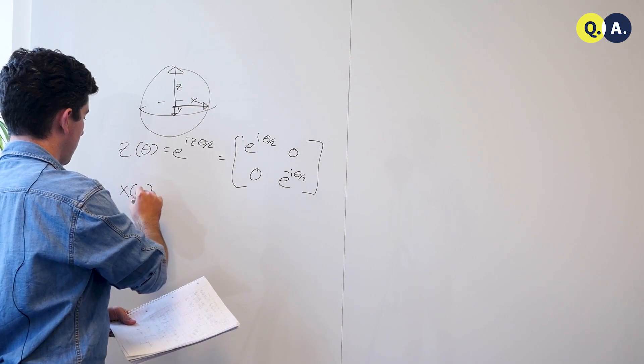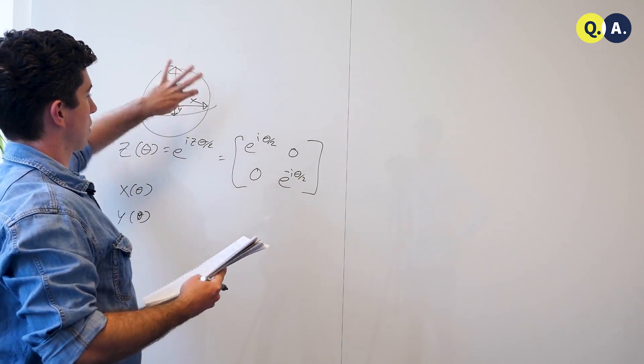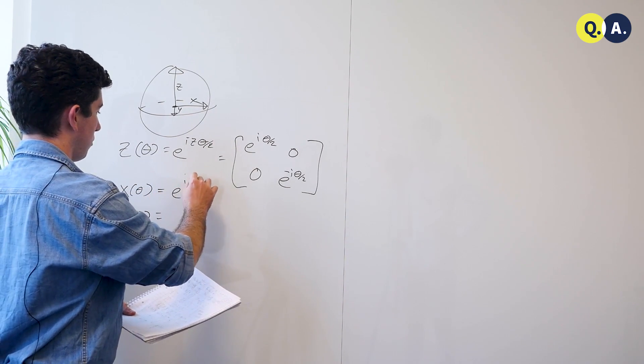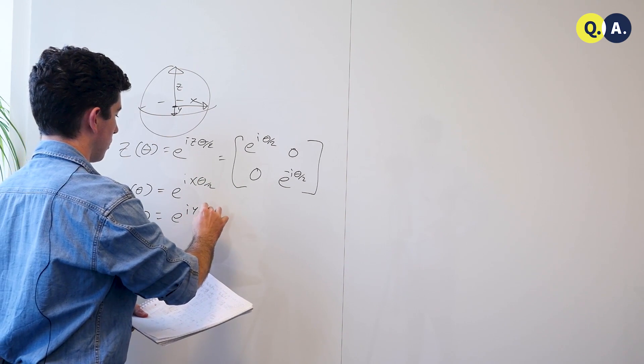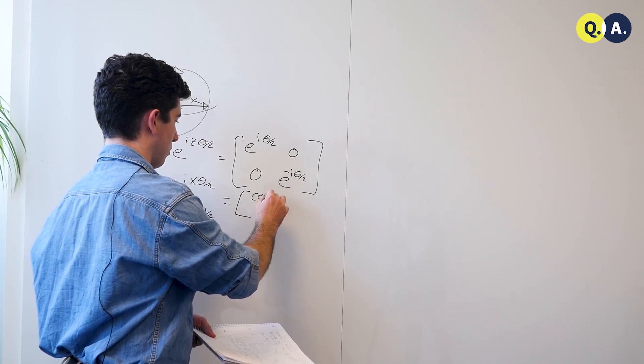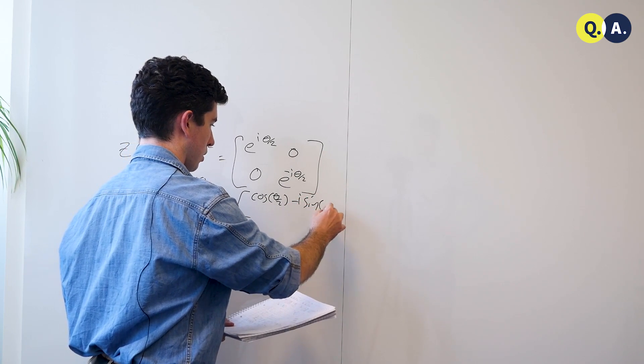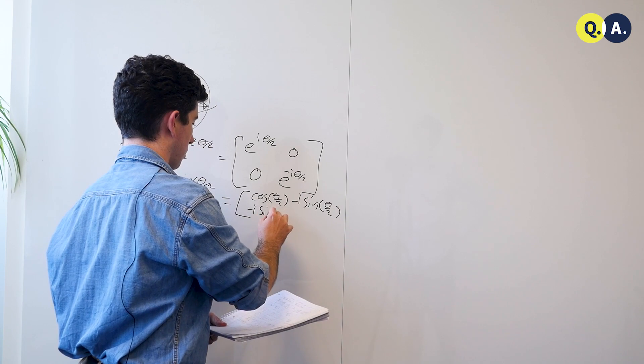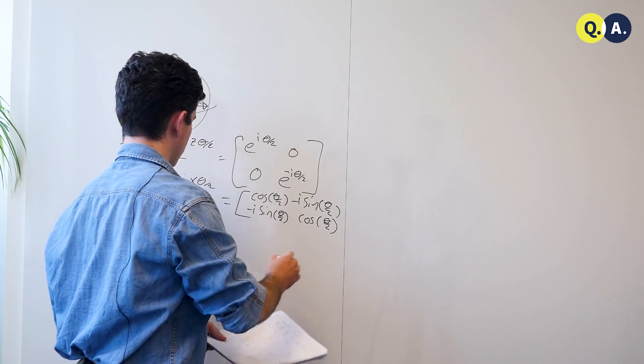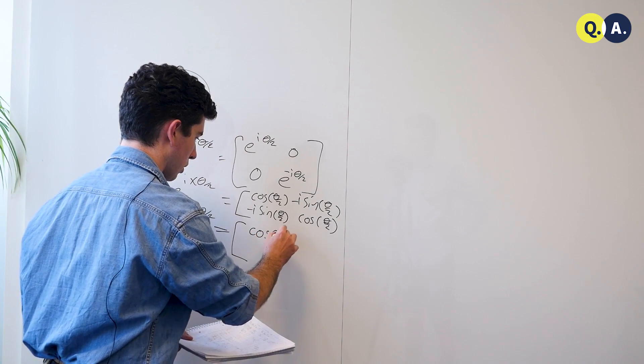So, we can write out x(theta) and y(theta), which are just rotations around these axes by angles theta: e^(i*x*theta/2), e^(i*y*theta/2). And this guy is equal to cosine of theta over 2, minus i sine theta over 2, cosine theta over 2.